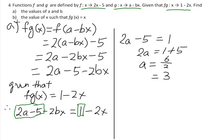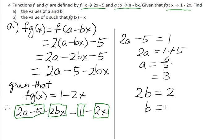The second step is to equate the coefficient of x. Minus 2b and minus 2: the coefficients match, so 2b equals 2, then b equals 2 over 2, therefore b equals 1.